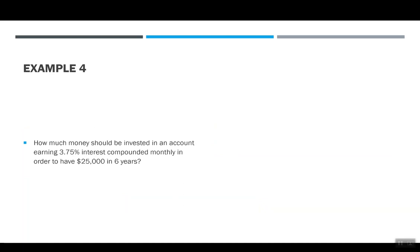This one, I'm just going to go a little backwards. This time, instead of telling you how much money you're putting in, I'm going to have you figure out how much money you need to invest. How much money should be invested in an account earning 3.75% interest compounded monthly in order to have $25,000 in six years? So this time, I don't know what P is, but I know the amount I want in the future is $25,000. I know the interest rate is 0.0375. Compounded monthly means N is 12, and the time is 6.